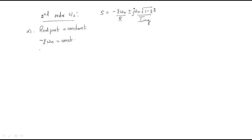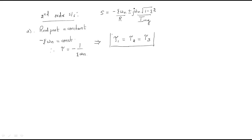The time constant is τ = 1/(ζωn), so if the real part is constant, the time constant is also constant. For three systems with poles having the same real part, the time constants are all equal: τ₁ = τ₂ = τ₃.